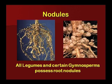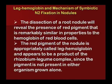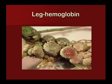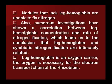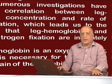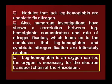Here we can see root nodules. All legumes and certain gymnosperms possess root nodules. The dissection of root nodules reveals the presence of a red pigment remarkably similar in properties to the hemoglobin found in human blood. This red pigment is appropriately called leghemoglobin and appears to be a product of the Rhizobium-legume complex. Nodules that lack leghemoglobin are unable to fix nitrogen. It is experimentally proved that root nodules having leghemoglobin are capable of nitrogen fixation. Leghemoglobin is an oxygen carrier, and oxygen is necessary for the electron transport chain of Rhizobium.